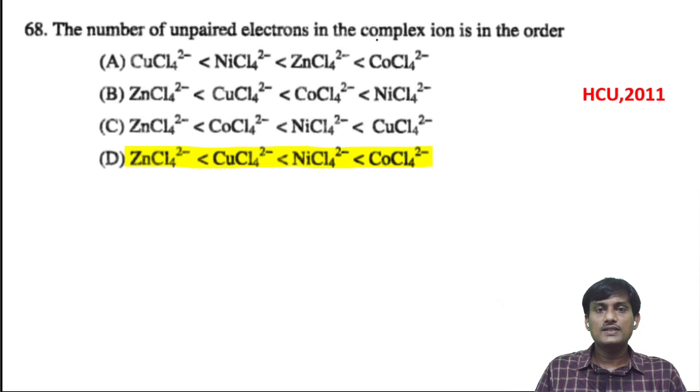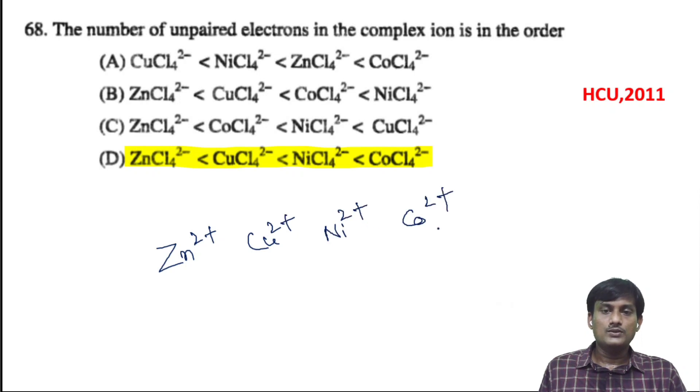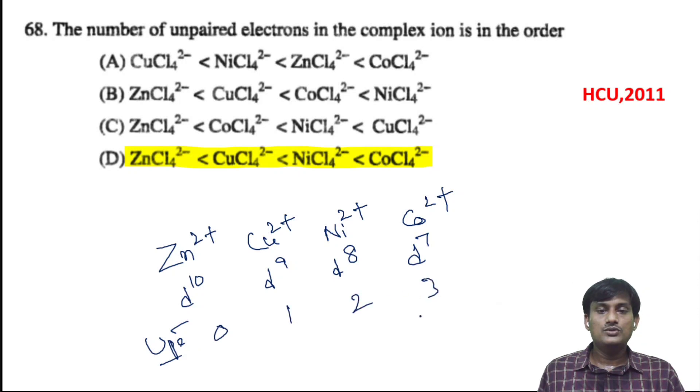The number of unpaired electrons in the complex ions is in the order. ZnCl4^2- has Zn^2+ which is d^10, so 0 unpaired electrons. CuCl4^2- has Cu^2+ which is d^9, so 1 unpaired electron. NiCl4^2- has Ni^2+ which is d^8, so 2 unpaired electrons. CoCl4^2- has Co^2+ which is d^7, so 3 unpaired electrons. The order is: CoCl4^2- has most (3), then 2, then 1, then 0.